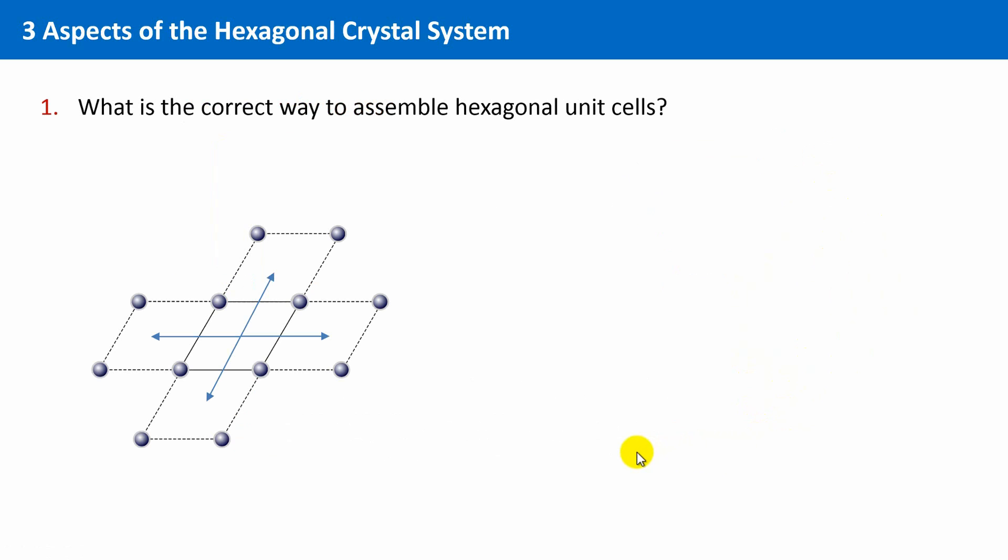The first question: how to assemble hexagonal unit cells? Well, actually, there is always only one way to build a whole crystal structure by assembling unit cells, regardless of the crystal system, and this is to translate the unit cell in all three directions.